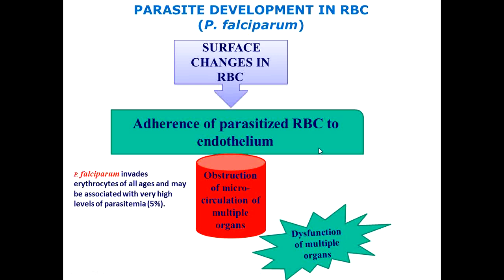Apart from this, there can be disruption of endothelial barrier integrity and leukocytic infiltration. To summarize the pathogenesis of plasmodium falciparum: there are surface changes in RBCs, causing infected RBCs to attach to the endothelial lining of blood vessels, forming a clot that obstructs microcirculation to multiple organs with damage to multiple organs.